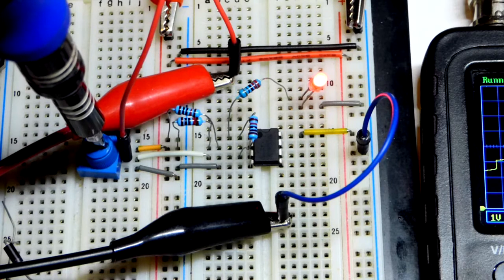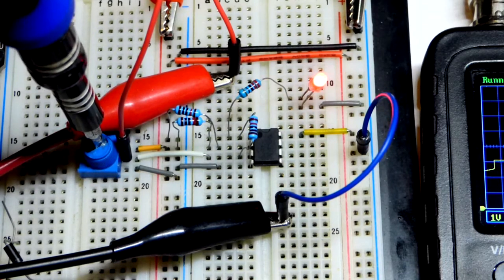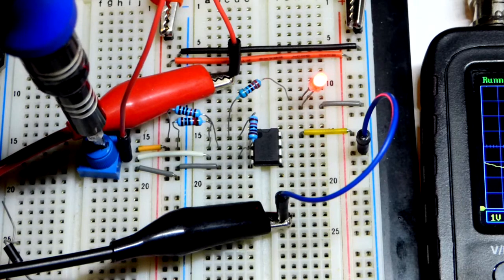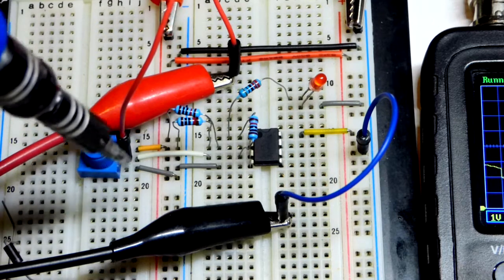And so this middle area is called hysteresis, where the LED and the output will stay in whatever state they were last put into, either high like that or low like that.